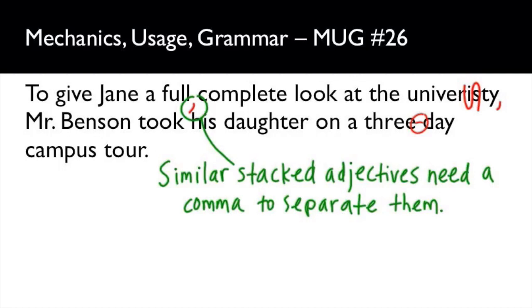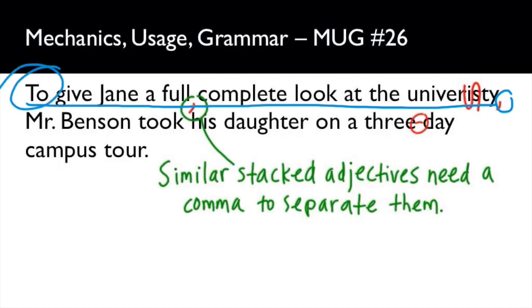We have this comma right here showing that this introductory element is an add-on to the main independent clause. The main sentence is "Mr. Benson took his daughter on a three-day campus tour." That comma is there because we have a prepositional beginning, so that's a little clue that you're going to have a comma coming up right there.